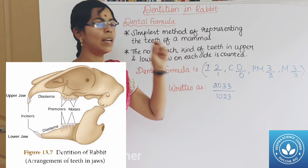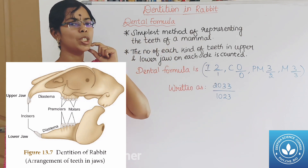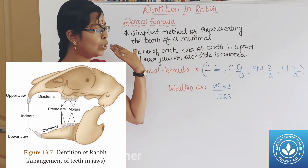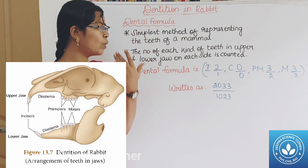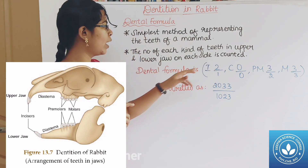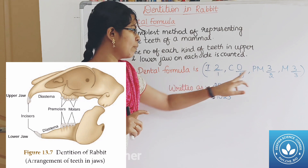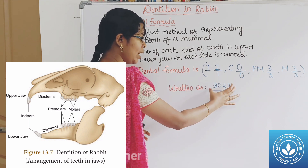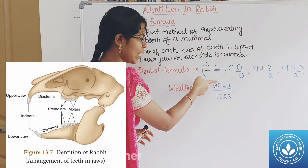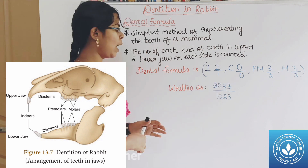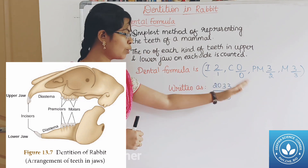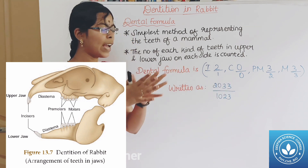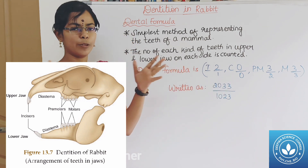In premolars, the upper jaw is 3 and the lower jaw is 2. The dental formula for the rabbit is 2033 over 1023, representing upper jaw over lower jaw for incisors, canines, premolars, and molars on one side. Multiplying by 2 gives the total number of teeth.